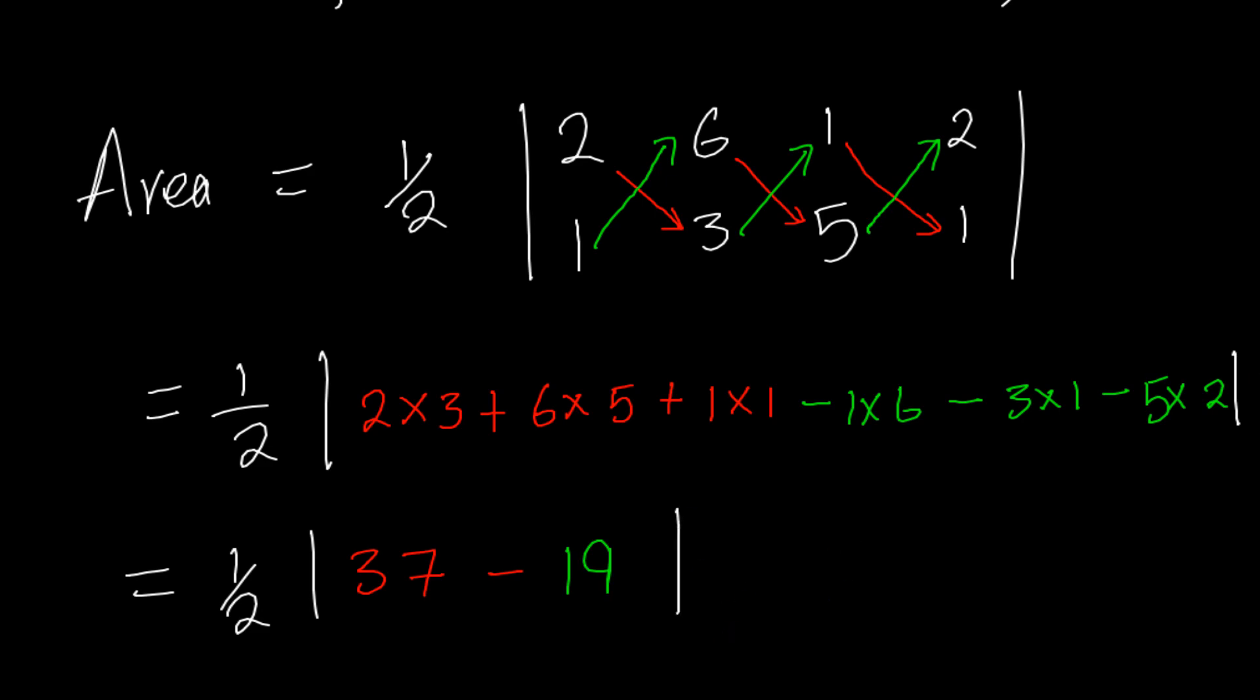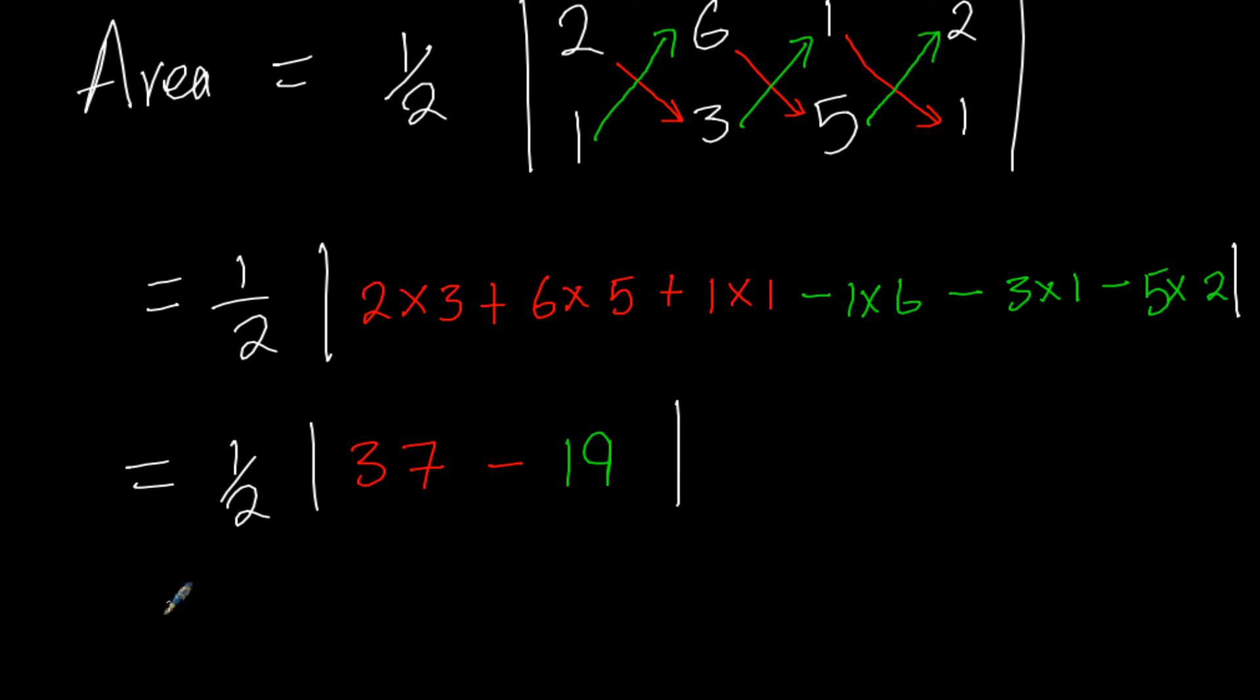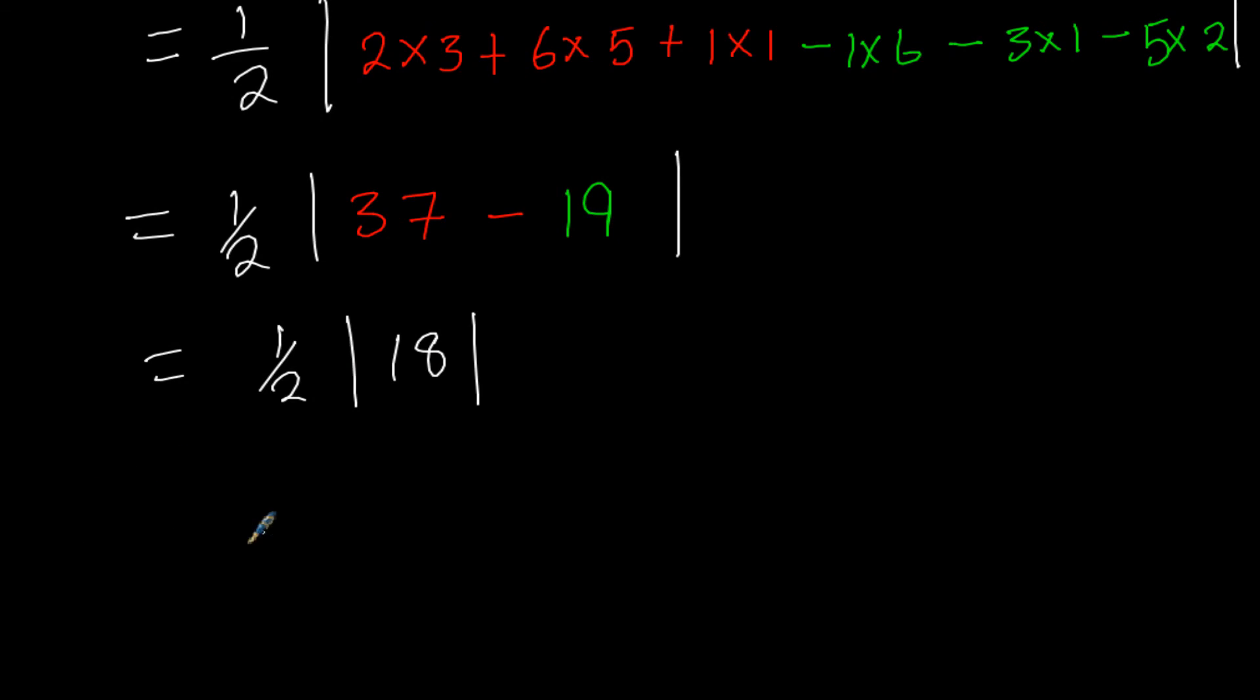So we have 37 minus 19, which will give us 18. So we have a half times 18, which gives us our answer as 9 square units.